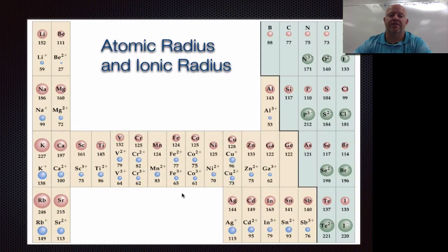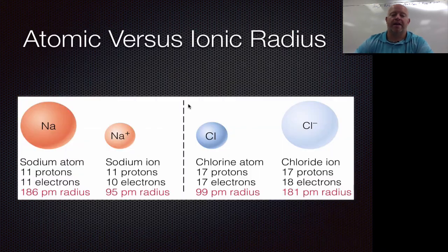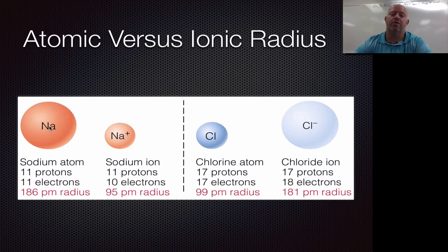Now let's look at the size of an atom versus the size of its ion. The atoms shown in red, the cations in blue, and the anions in green. Cations are always smaller than their corresponding neutral atom, and even within ions, a 3+ ion is smaller than a 2+ ion. Anions tend to be bigger than their neutral atoms. For example, sodium neutral gets smaller as a sodium ion, and chlorine neutral gets bigger as a chlorine ion. In all cases, a cation is always smaller than the original atom, and an anion is always bigger.